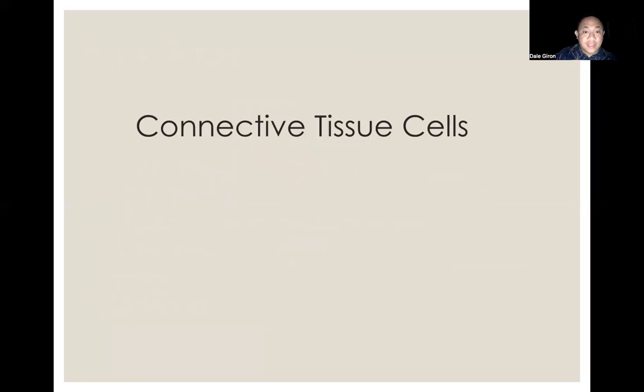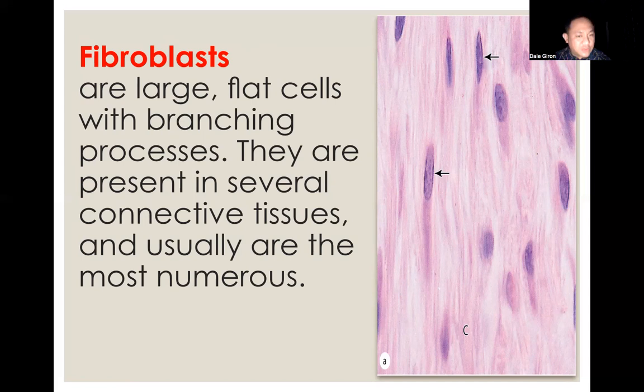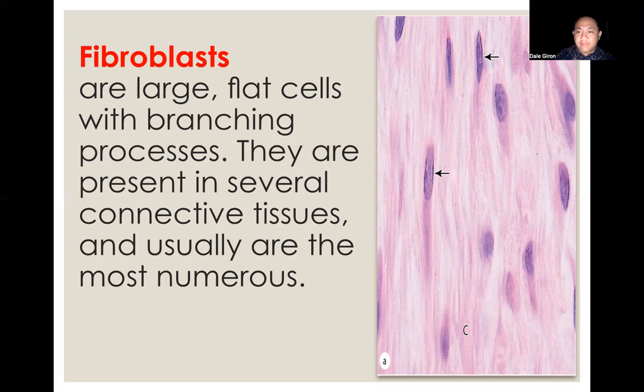Let's talk about the connective tissue cells. First are your fibroblasts — large flat cells with branching processes, present in several connective tissues and usually the most numerous. Fibroblasts are the main characteristic cells of your connective tissue. Please take note of that — they are the characteristic cells of the connective tissue.